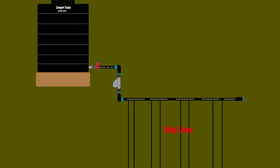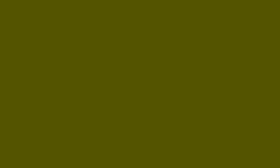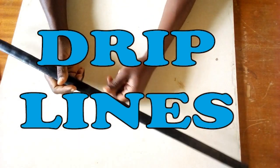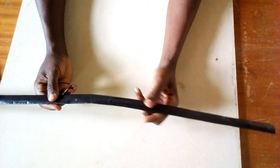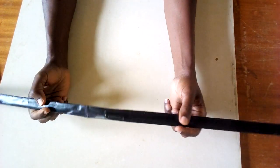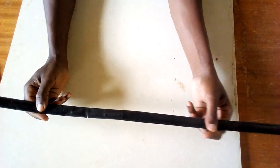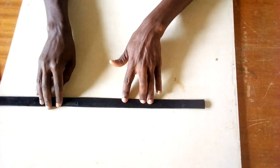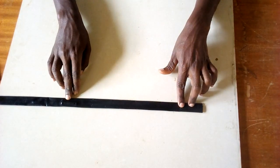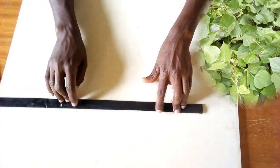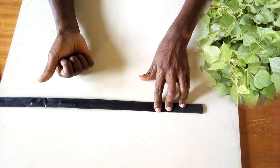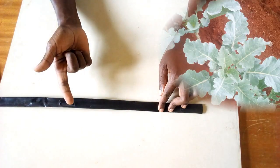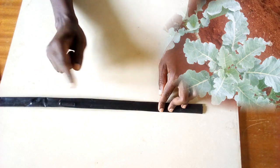But as usual, let me start at my desk. Drip lines are used to channel water from the main line to the individual plant in the field. This is a drip tape. It comes with embedded emitters, usually at constant spacing, like 15 cm if you want to plant beans.